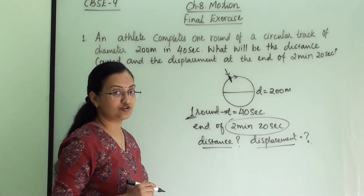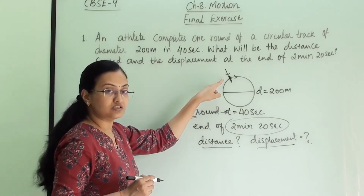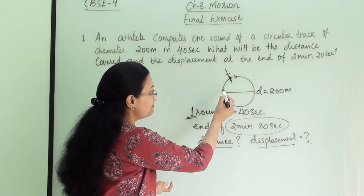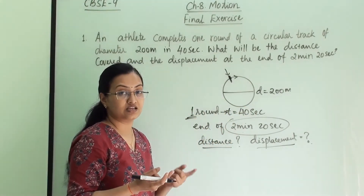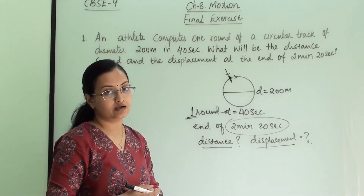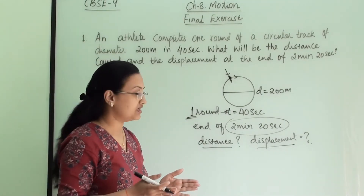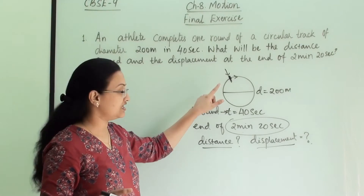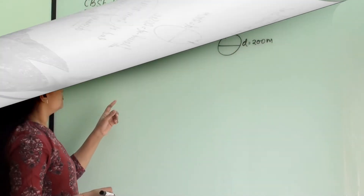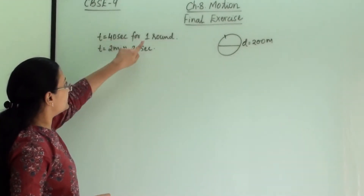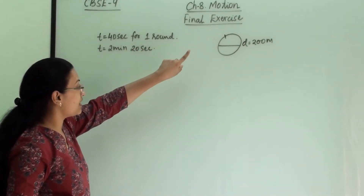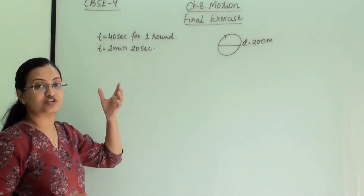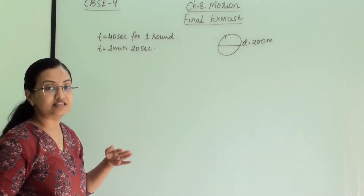We have to find out what the total distance for one round is. Since the track is a circle, we calculate the circumference to get the distance covered in one round. From there we will start the numerical: first find the circumference, then check how many rounds he takes in the given time period. We know 40 seconds is there for one round, and in 2 minutes 20 seconds we need to find how many rounds he takes, how much distance he covers, and what his displacement will be.